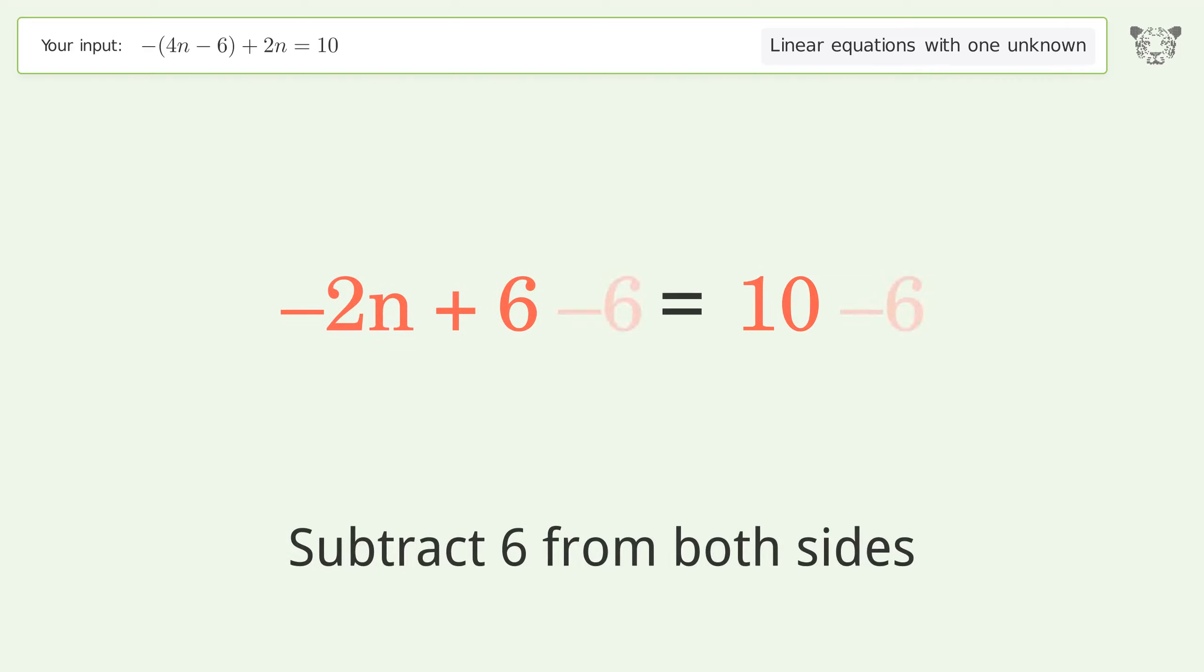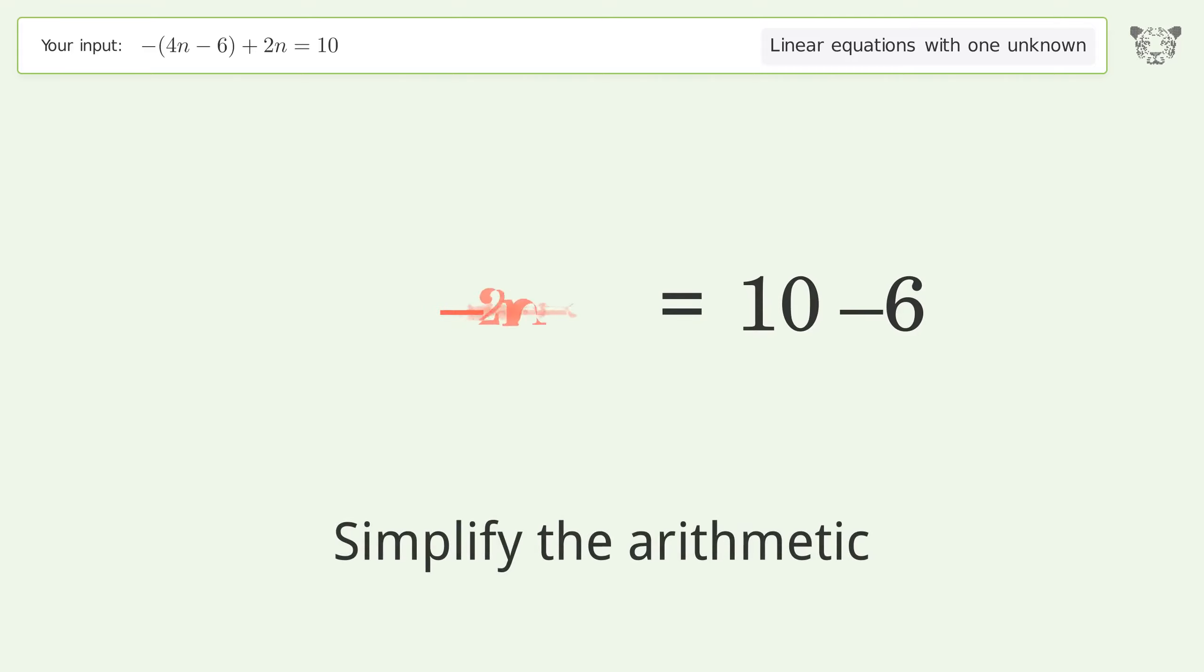Group all constants on the right side of the equation. Subtract 6 from both sides. Simplify the arithmetic.